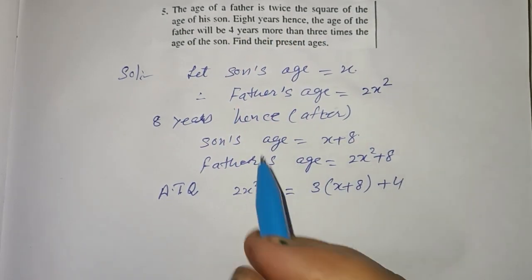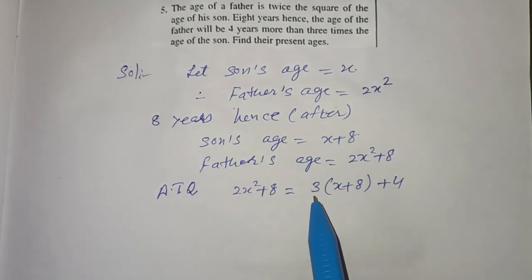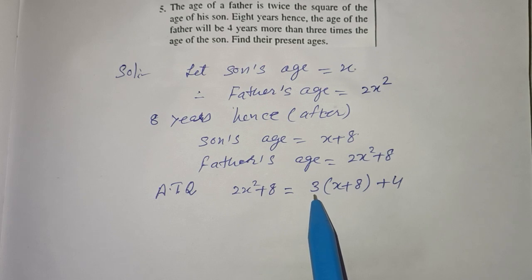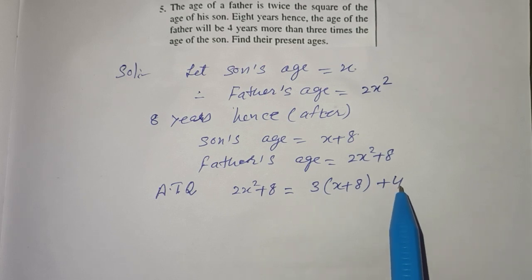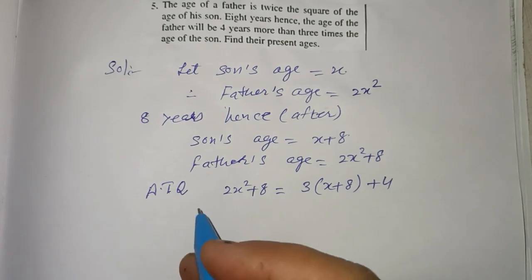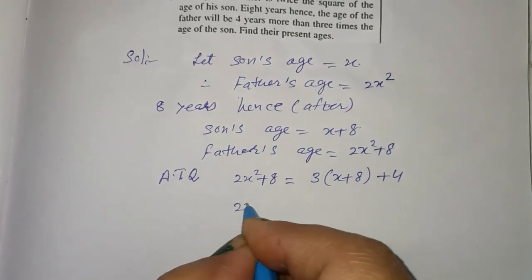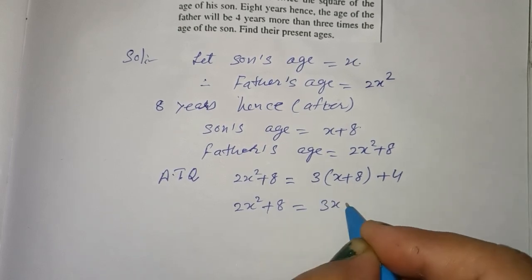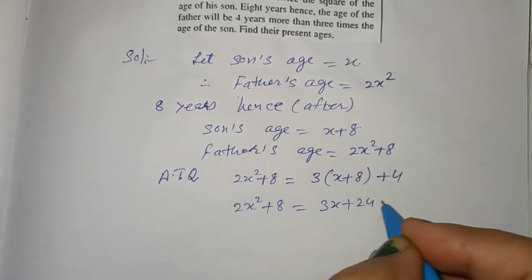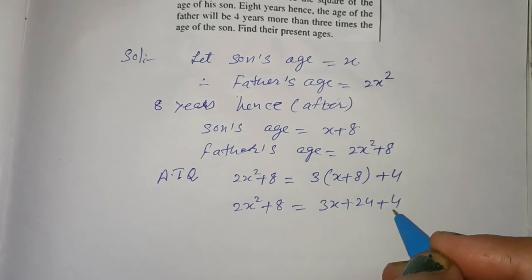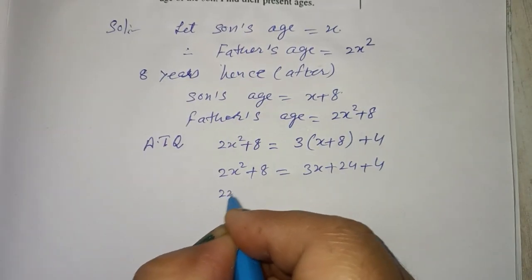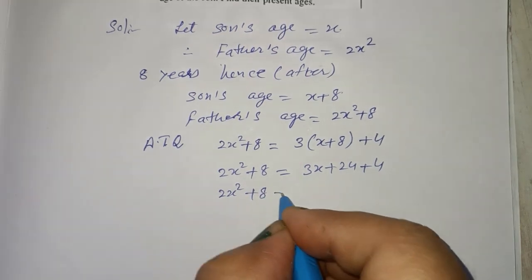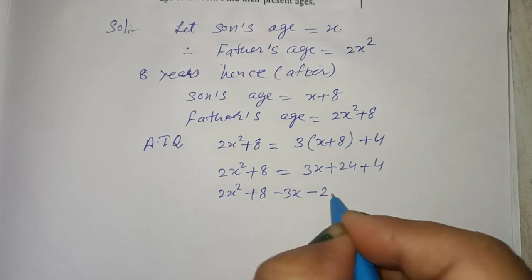8 years father age, son age, 3, 4 more, solve. 2x square plus 8 is equal to 3x plus 24 plus 4. 2x square plus 8 minus 3x minus 28